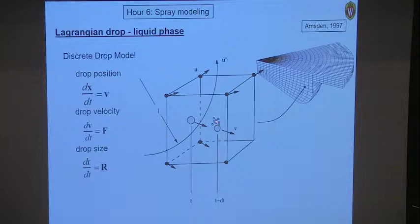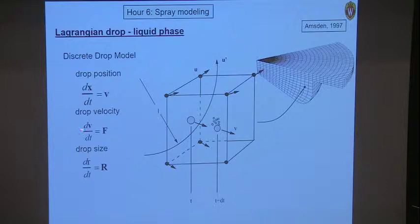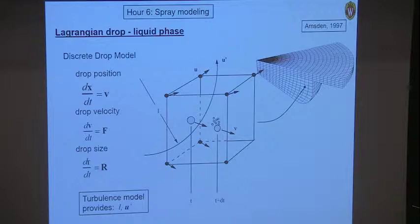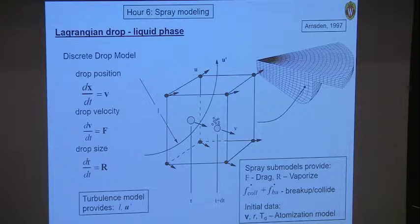During this process, breakup can occur and generate new droplets from a source term. The velocity changes are driven by the drag force — F = ma, essentially drag force per unit mass. The droplet size is driven by the vaporization model; it could even increase if there's condensation. The turbulence model provides length scales and turbulence kinetic energy needed for some of the models. The spray sub-models provide expressions for drag, vaporization, collision, and breakup. Initial conditions at the injector — initial velocity, size, and temperature — come from an atomization model.